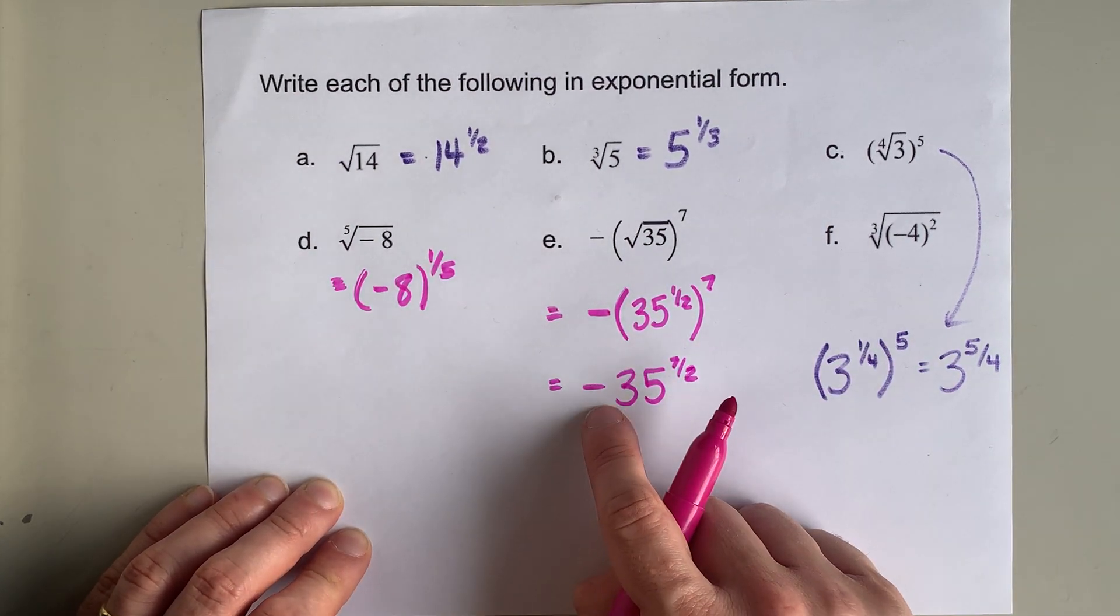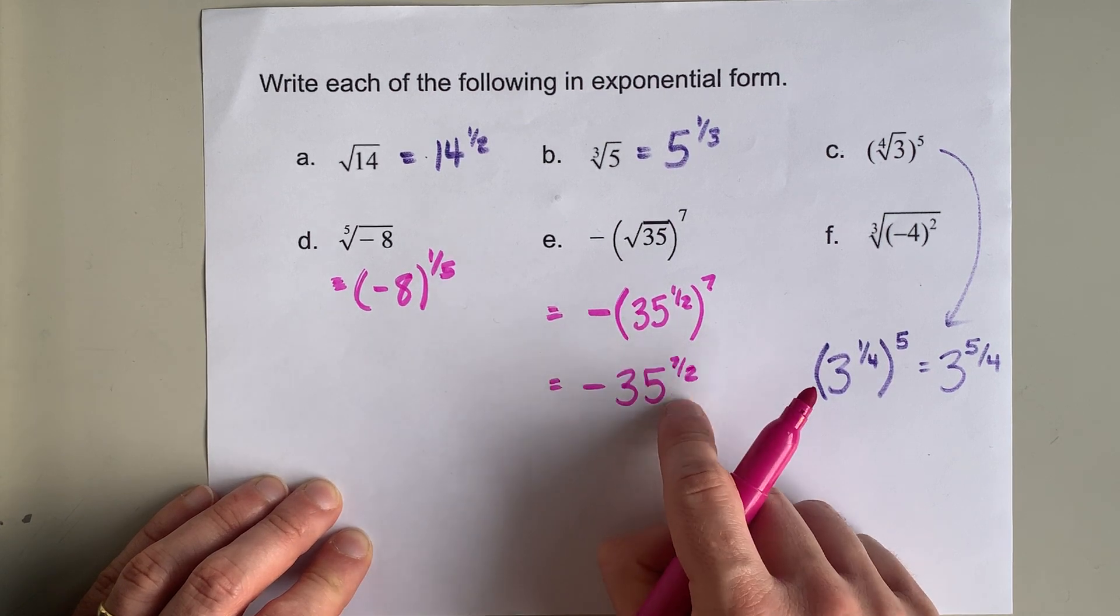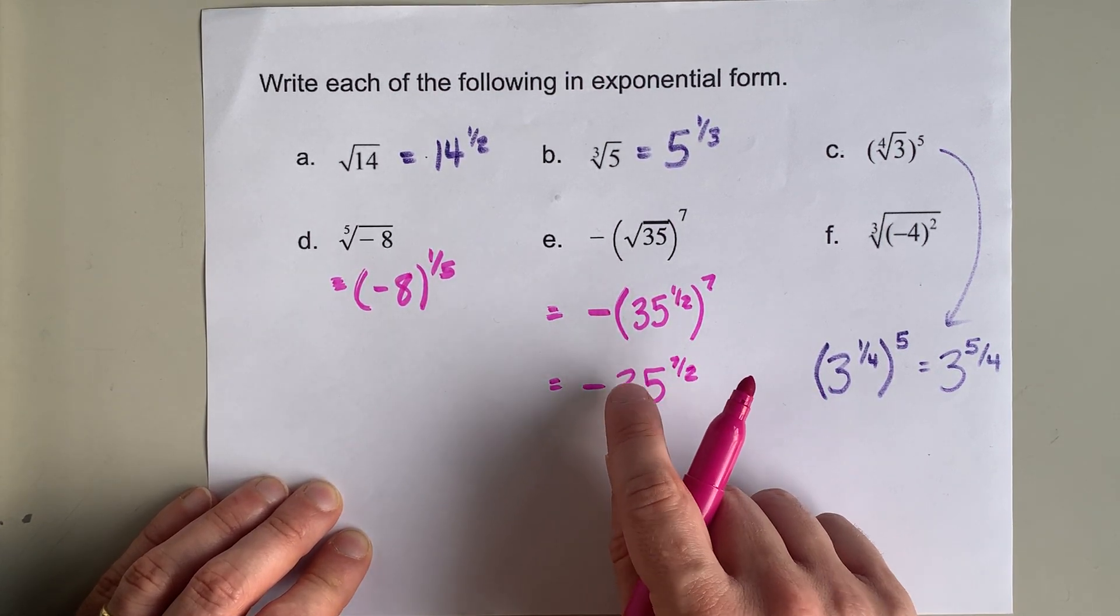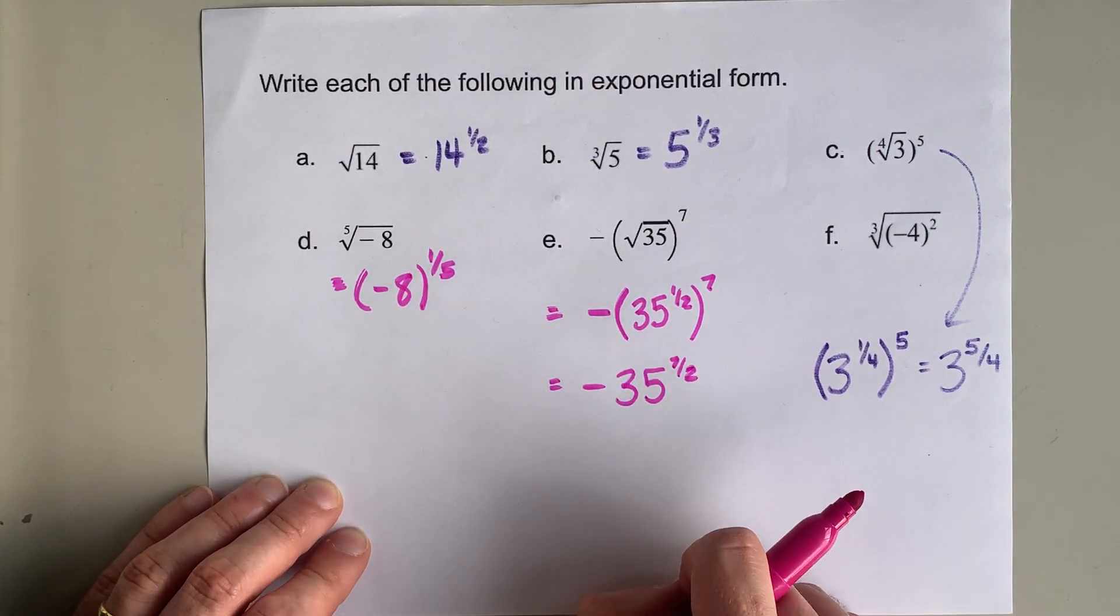Now, if you don't write that negative in brackets with the 35, everyone knows you do the power first and then negativize the answer because of order of operations.